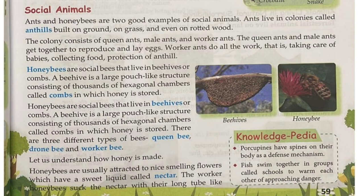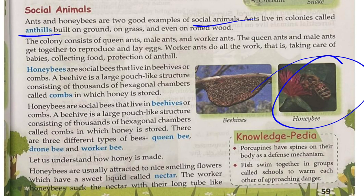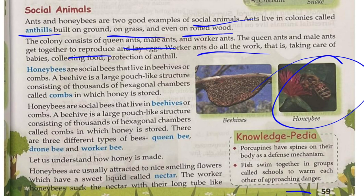Social animals: ants and honeybees are two good examples of social animals. Ants live in colonies, which are called ant hills, built on the ground, on grass, and even on rotted wood. The colony consists of queen ants, male ants, and worker ants. The queen ant and male ants get together to reproduce. Worker ants do all the work — taking care of babies and collecting food.